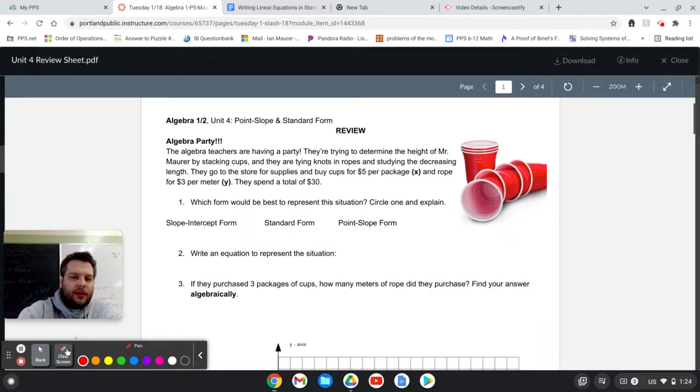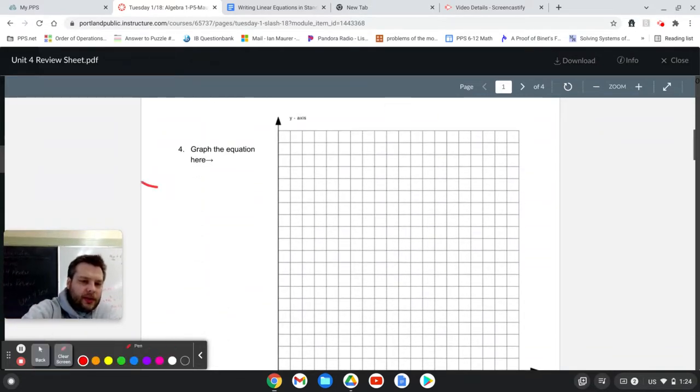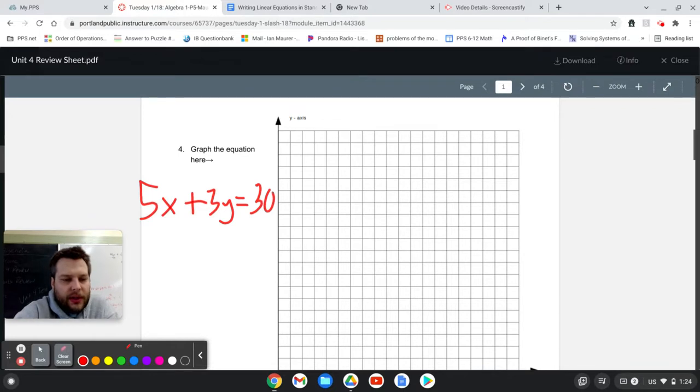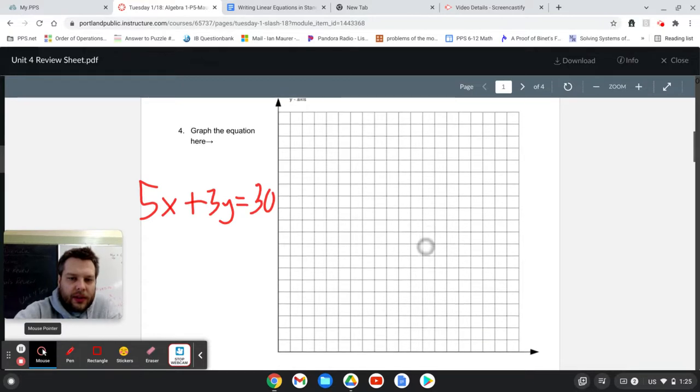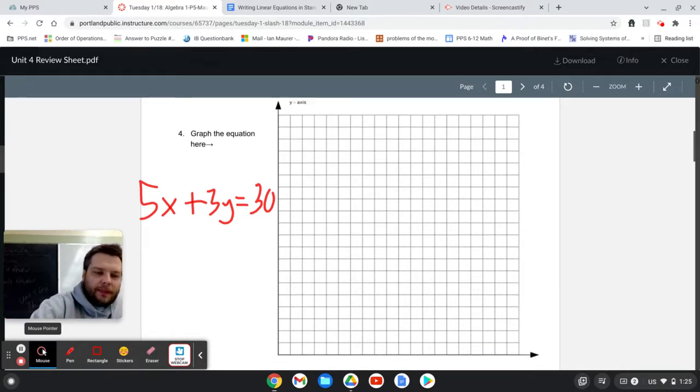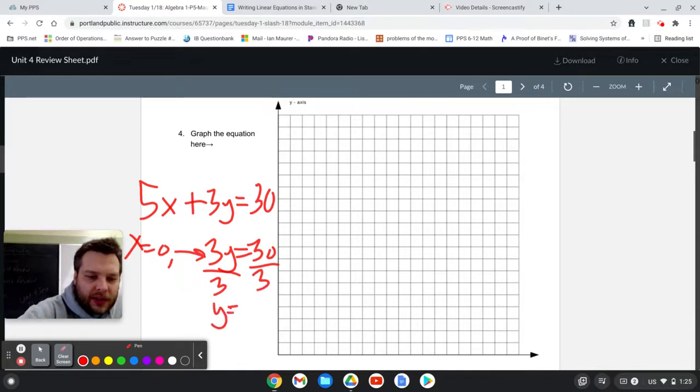I'm going to clear the screen and then go graph it. So our equation, once again, 5x plus 3y equals 30. Two different ways to graph it. One way is to plug in x equals zero and plug in y equals zero to find your x and y intercepts. And another way is to convert it to y equals mx plus b. Both are equally good. I'm going to do the x equals zero and y equals zero strategy. So if I do x equals zero, that leads me to have 3y equals 30. And dividing both sides by three tells me that my y intercept has to be 10.